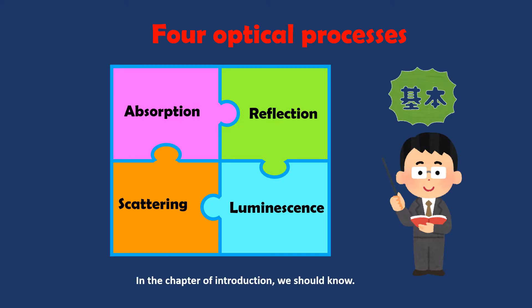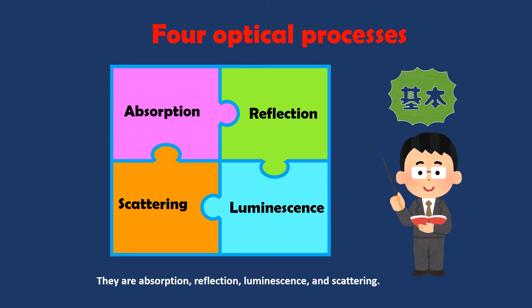In the chapter of Introduction, we should know there are four types of light-matter interactions. They are absorption, reflection, luminescence, and scattering.